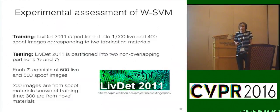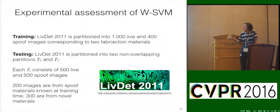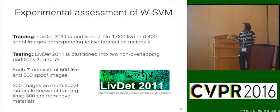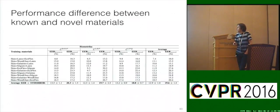We did a very large-scale experimental assessment, and this is a really nice proving ground for open set recognition problems — it's a real issue, a tough problem, and there are serious stakes involved based on security. There's a really nice series of fingerprint spoof challenges called LiveDet released from year to year. We looked at LiveDat 2011 and partitioned the data set into 1,000 live and 400 spoof images corresponding to two fabrication materials. For testing, we partitioned it into two non-overlapping partitions, T1 and T2, each consisting of 500 live and 500 spoof images — 200 from spoof materials known at training time, and 300 from unknowns.